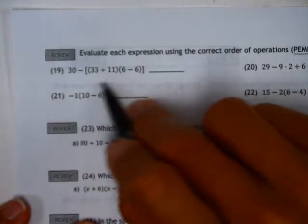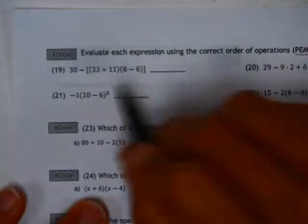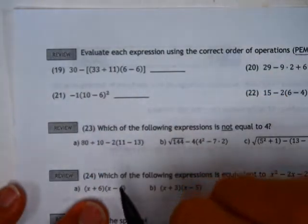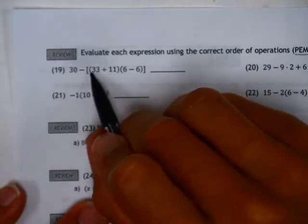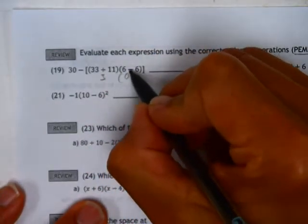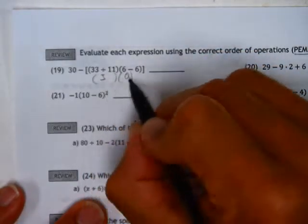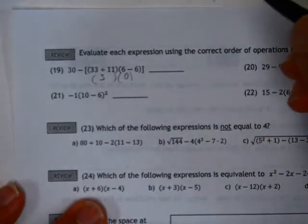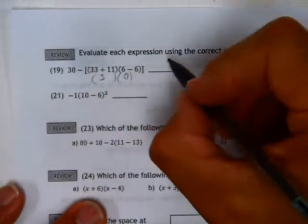You've got parentheses within brackets with minuses out in front, and I would just say every little sub-parentheses, just go there first. 33 divided by 11, that's 3. 6 minus 6 is 0, which makes our life easier because anything times 0 is 0. So you've got 30 minus 0, which is 30.